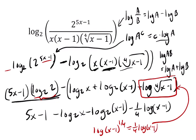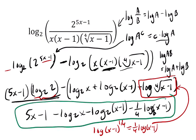So we have 5x minus 1 minus the log base 2 of x minus the log base 2 of x minus 1 minus 1 fourth the log of x minus 1. And this right here is our answer. There's nothing else that we can do to expand this. All right, I hope that helped. Thank you.